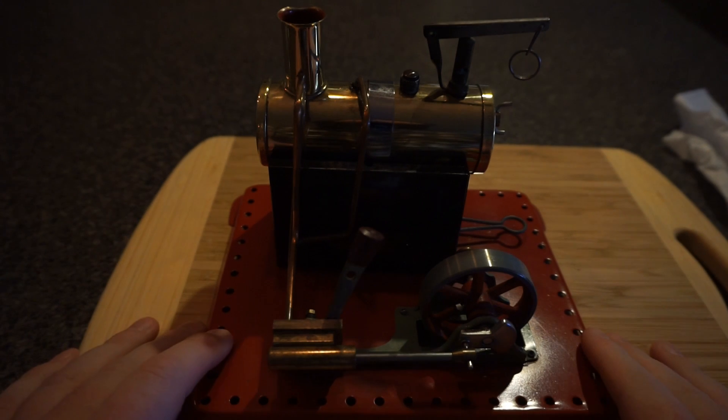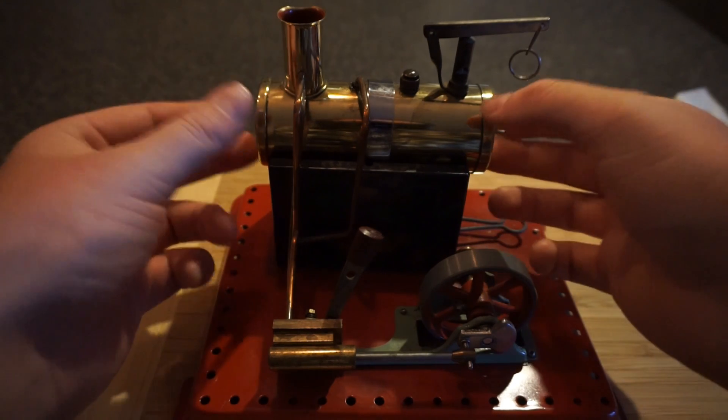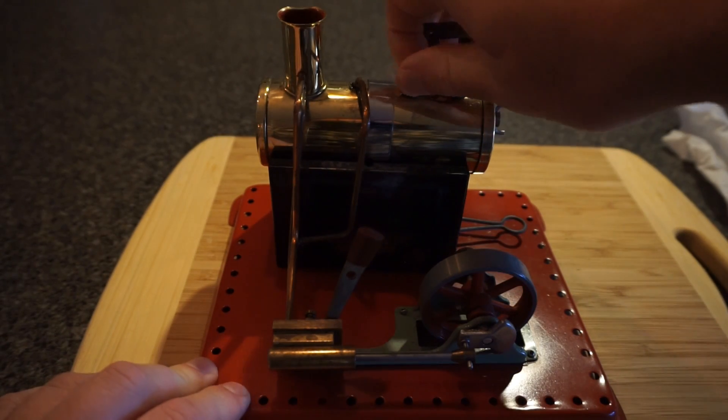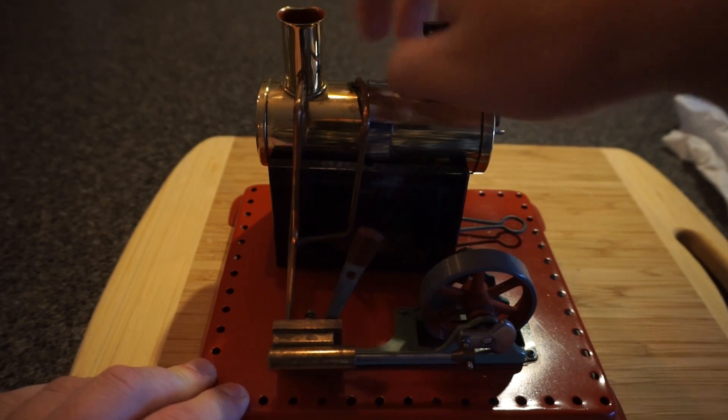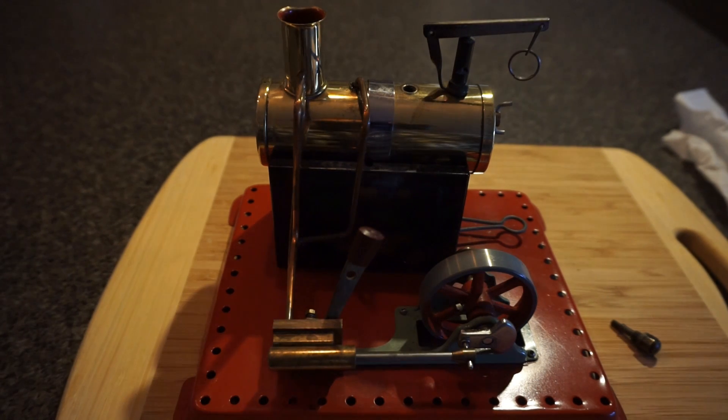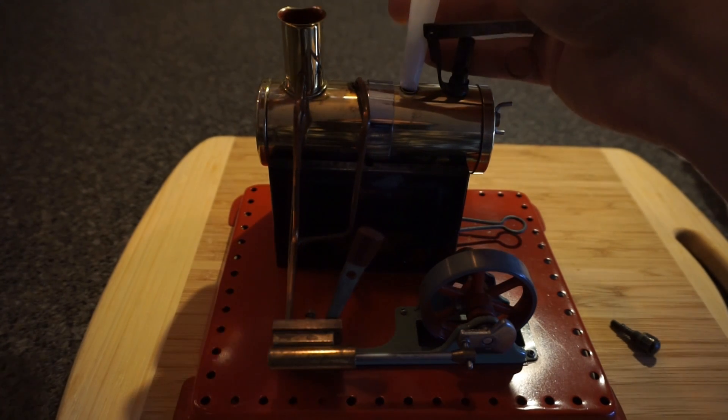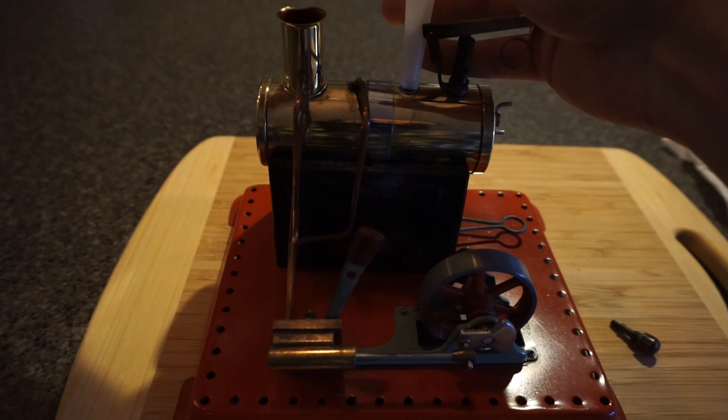I'll just take you through a demonstration of how this works. So this big brass section here is called the boiler and that's where we place the water for it to boil into steam and this is where we fill it up. We just unscrew this little cap here. Let's just top it up with some water. I'm not sure how much water is in there so it's a bit of a guessing game. I'll just put a little bit in there.